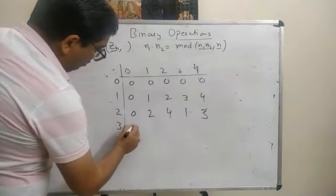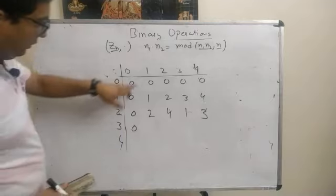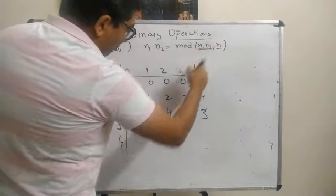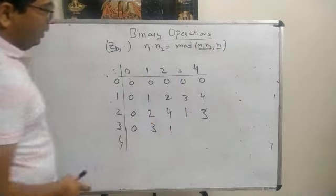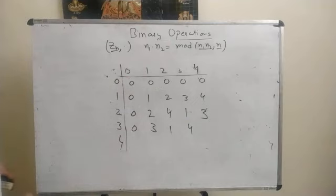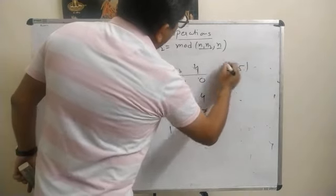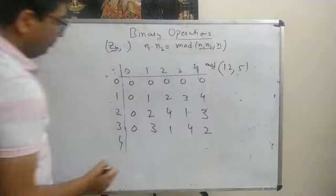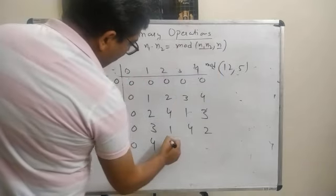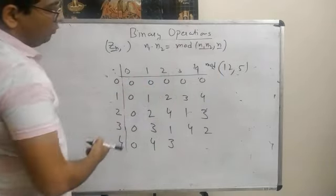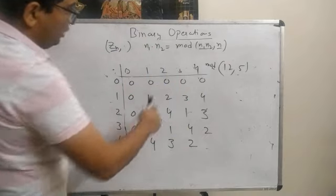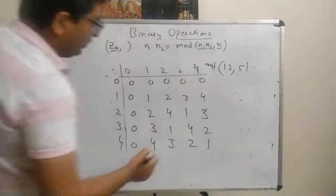Row for 3: 3·0=0; 3·1=3; 3·2=6, mod 5=1; 3·3=9, mod 5=4; 3·4=12, mod 5=2. So row 3 is 0,3,1,4,2. Row for 4: 4·0=0; 4·1=4; 4·2=8, mod 5=3; 4·3=12, mod 5=2; 4·4=16, mod 5=1. So row 4 is 0,4,3,2,1. This completes the composite table for Z5 under multiplication.